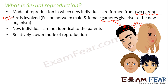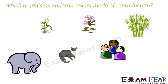Sexual reproduction is a relatively slower mode of reproduction when compared with the asexual mode. Now, which organisms undergo sexual mode of reproduction? First of all, human beings — but not only humans and animals. Even plants also undergo sexual mode of reproduction, so plants can actually reproduce both sexually as well as asexually.